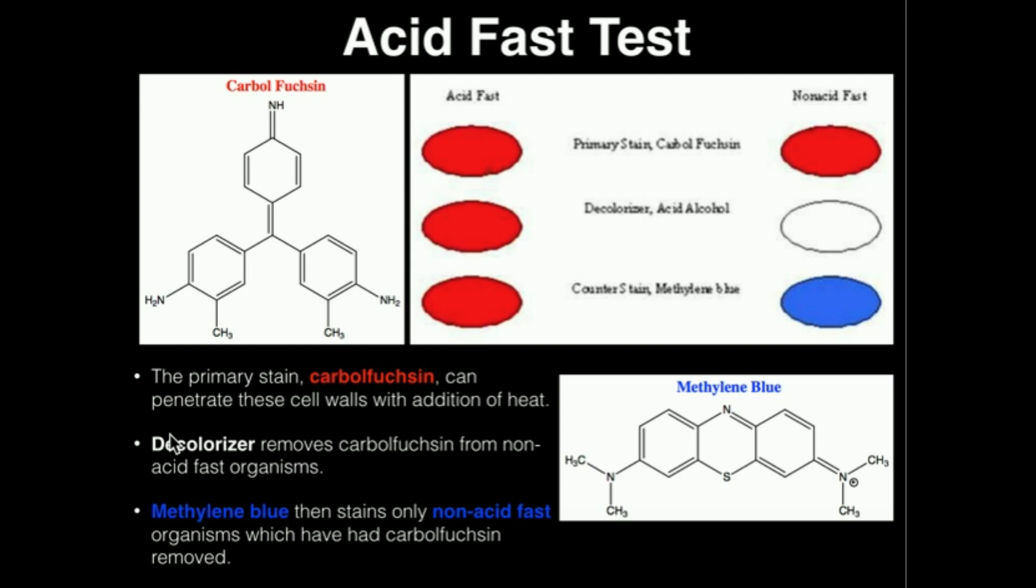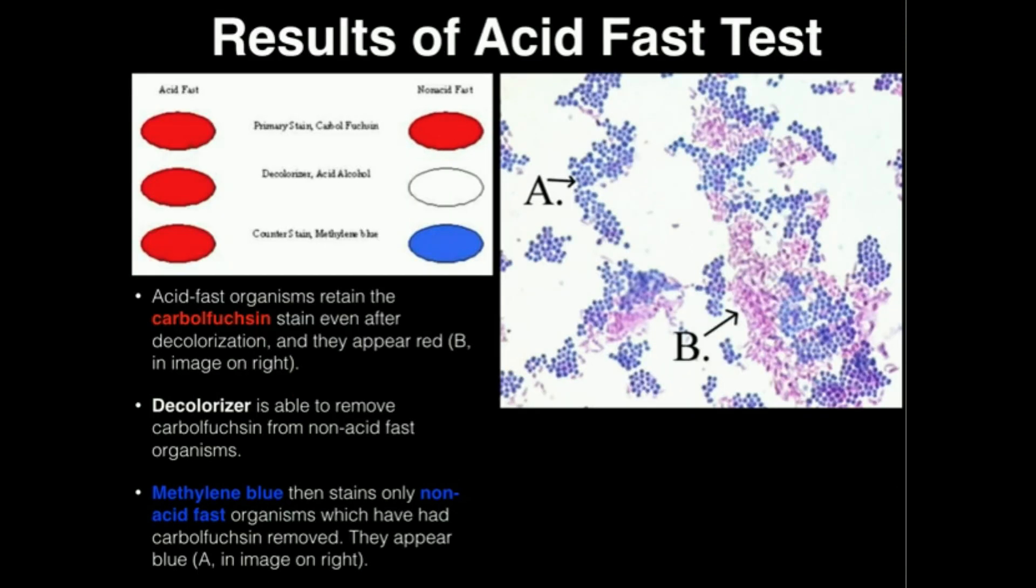This is basically reiterating what I just said. The primary stain, carbolfuchsin, is able to penetrate into the cell walls of acid-fast organisms, especially when you add heat. You decolorize and then use methylene blue. And so your end result, which we'll look at on this slide, is that acid-fast organisms stain red and non-acid-fast organisms stain blue.